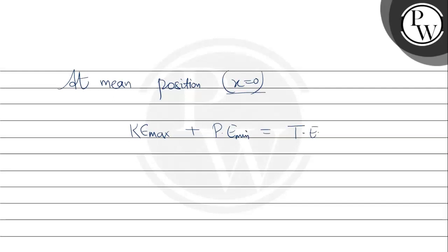KE max we calculated is 480 Joule, plus we have to find out minimum potential energy, which equals total energy. Total energy given is 600. Therefore, potential energy minimum equals 600 minus 480 equals 120 Joule. This is your answer.